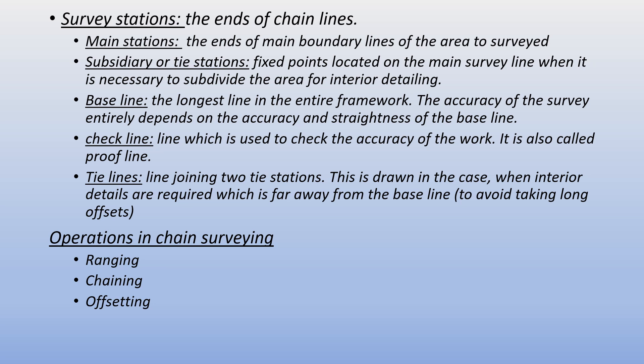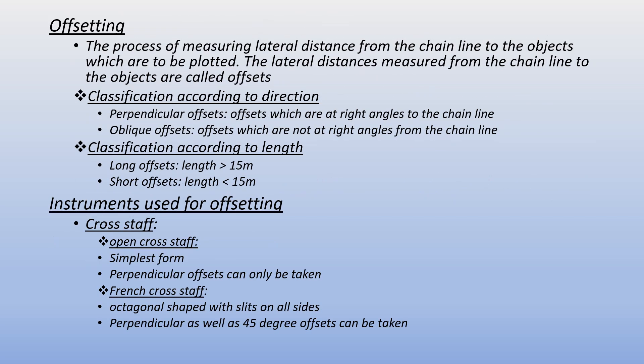The operations in surveying are ranging, chaining, and offsetting. Offsetting is the process of measuring lateral distances from the chain line to objects which are to be plotted. These lateral distances measured from the chain line to objects are called offsets.